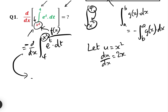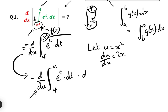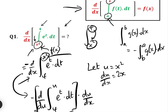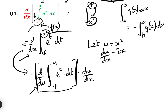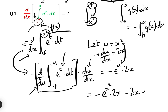This now equals minus d/du of the integral from 4 to u of e^t dt — since u equals x² — multiplied by du/dx, and that is the chain rule. So instead of d/dx we are doing d/du times du/dx. This expression is now in exactly the standard FTC form with u replacing x, so the answer is f(u). Replacing t by u gives minus e^u times du/dx, which is 2x. Substituting back u = x² gives minus e^(x²) times 2x.